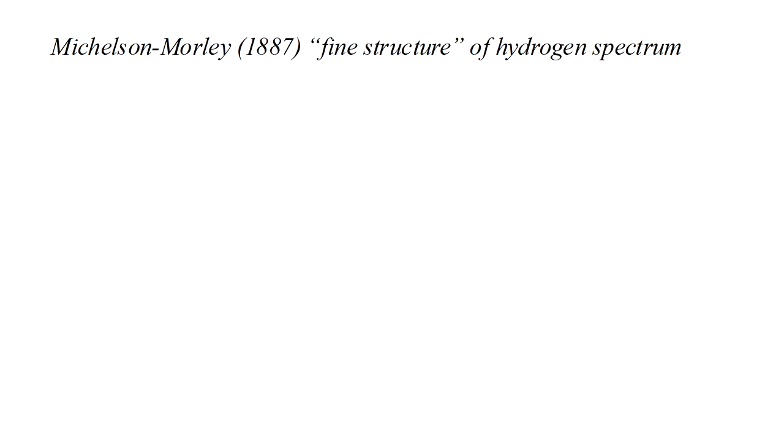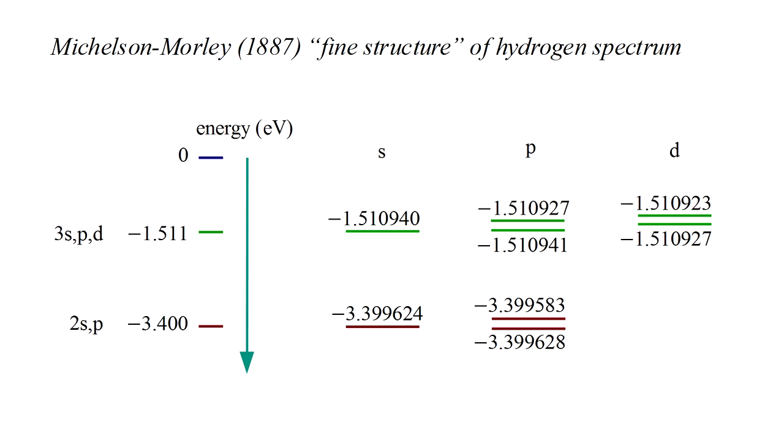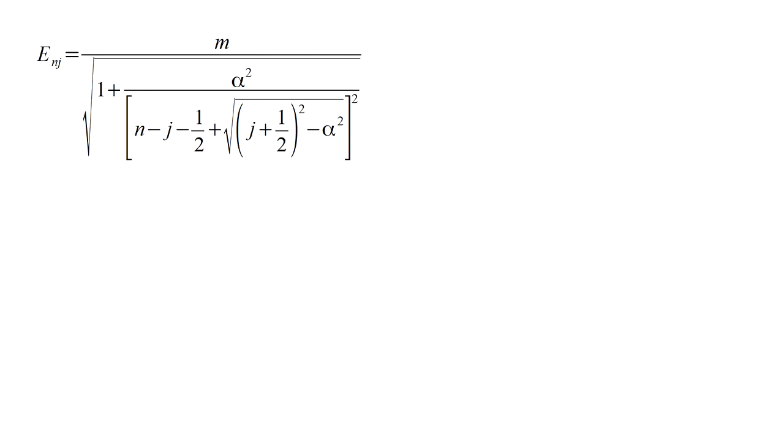Before we look at the Dirac equation predictions for the hydrogen atom, recall it had long been known that the hydrogen spectrum has a so-called fine structure. We discussed this in detail in the video on spin. The Schrodinger equation predicts the same energy levels for all orbital types, s, p, d, etc., corresponding to the same n value. But, all orbital types except s are observed to actually split into two very close energy levels.